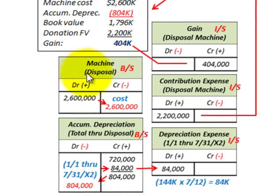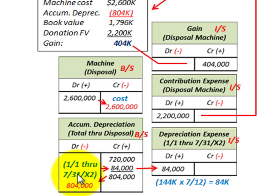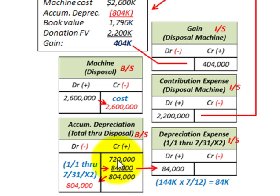For the journal entry, we remove the machine at its cost, and then handle accumulated depreciation as before. For the year, we calculate depreciation through 7/31, which is 7 months times $144,000 per year, giving depreciation expense of $84,000. The total accumulated depreciation is the beginning amount plus $84,000 for the year, giving us $804,000, which we take off the books.